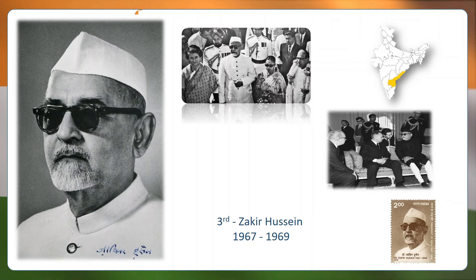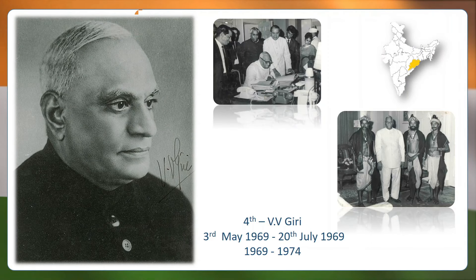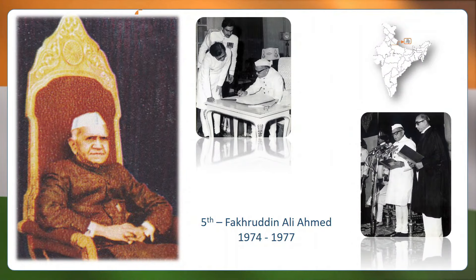He was awarded Bharat Ratna in 1963. V.V. Giri was the fourth President of India from 24 August 1969 to 24 August 1974. He was the only President to be elected as an independent candidate. He was born in Behranpur, Madras Presidency, present day Odisha, India. In 1913, he went to Ireland to study law which he did at University College Dublin and the Honourable Society of Kings Inn in Dublin between 1913 to 1916.